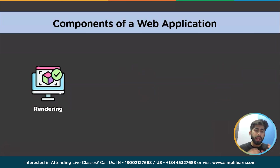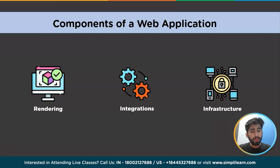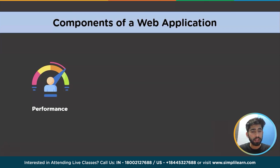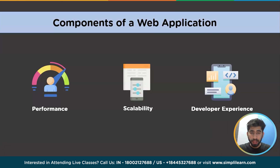Next we'll talk about rendering — when and where static or dynamic material is rendered. Integrations — what third-party services you use, like CMS, Auth, Payments, etc., and how to connect with them. Infrastructure — when you deploy, store, and run your application code serverlessly, CDN, Edge, etc. Performance — how to optimize your application for end users. Scalability — how your application adapts as your team, data, and traffic grow. Developer experience — your team's experience building and maintaining your applications.